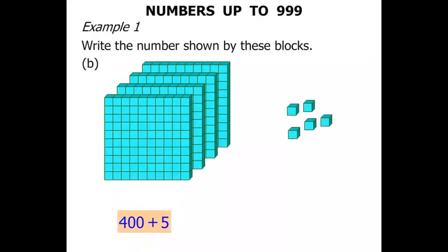What do we have? We have 400 plus 5. That of course equals 405. Let us write that number down up there.